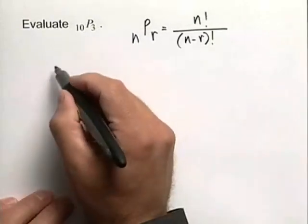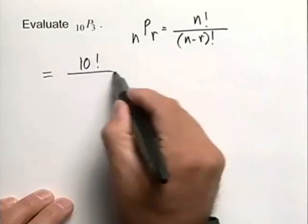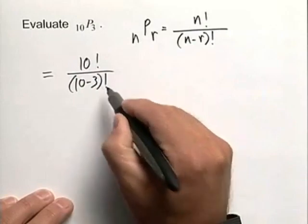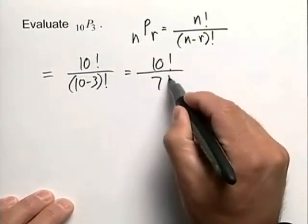So let's go ahead and evaluate this here. We have n being 10 in this example, 10 factorial, all over 10 minus 3 factorial. That will simplify to 10 factorial all over 7 factorial.